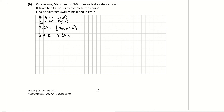Mary runs 5.6 times faster than she can swim. Looking at the distance-speed-time triangle, time equals distance over speed. For the swim, the distance is 4 kilometres and the speed is unknown, so I'll call it x to represent the swim speed.